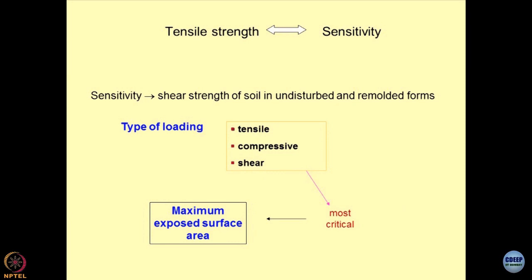The simple logic is: the more you compact the soils, the more suction gets built in because air has been expelled from the pores. This tensile strength also influences the sensitivity of the soils. In conventional geomechanics, sensitivity is ascribed to the ratio of shear strengths — the shear strength of soil in its undisturbed state to the remolded state. One way of looking at the tensile strength could be to use the concept of sensitivity and talk about shear strength parameters associated with the soil mass in its undisturbed as well as remolded state.